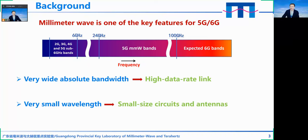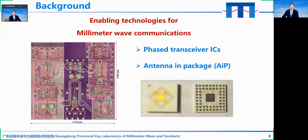Millimeter wave provides very high data rate links. Besides, it has a very short wavelength, which means very small size circuits and antennas. These features make large-scale massive MIMO a viable enabling technology for millimeter wave communications. Transceiver integrated circuits and their corresponding packages with antennas are the top two most important ones.